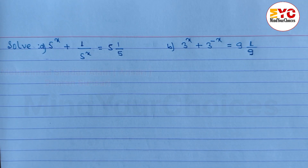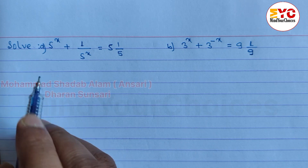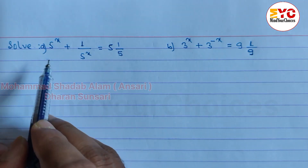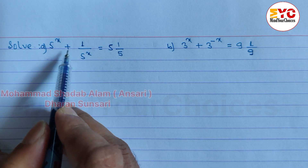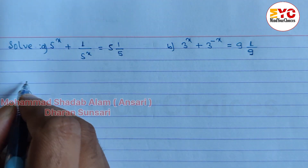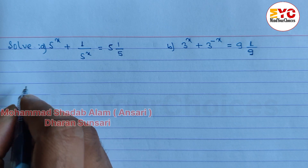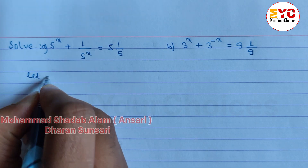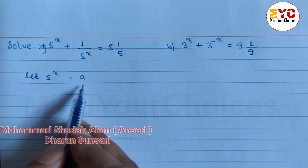This question from Class 10 indices will score 3 marks. The question is: 5^x + 1/5^x = 5 and 1/5. We can start. We can write here: let 5^x be equal to a.